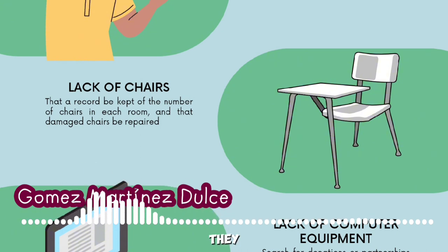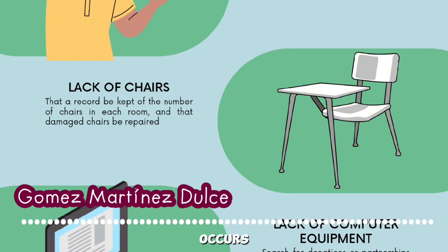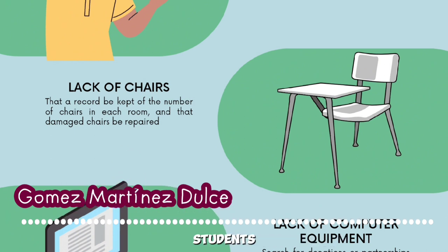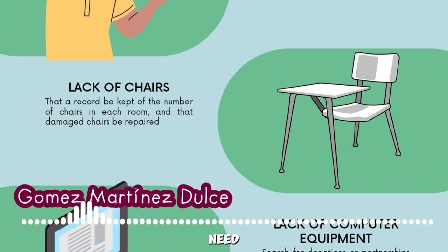Another problem is that there is a lot of vandalism and some benches are not in very good condition. Our solution would be to organize a maintenance program among students where we can document and report any damage that occurs to equipment, and to reduce further damage, organize a program where students take responsibility for the condition of their seats and report issues so they can be resolved.